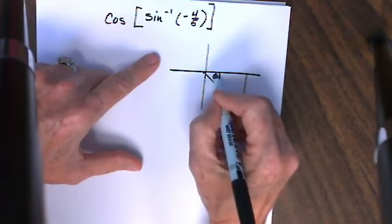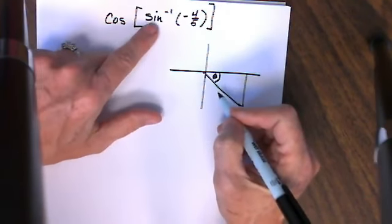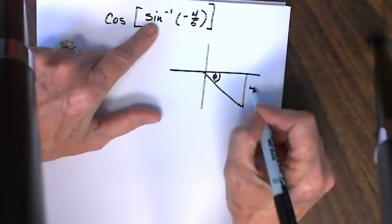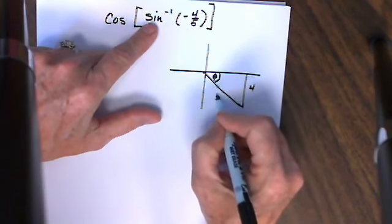I'm going to say that this is the angle that is produced. When I take the sine of that angle I'm going to get opposite which is 4 over hypotenuse which is 5.